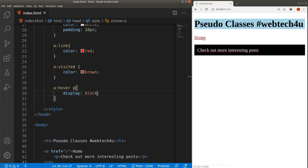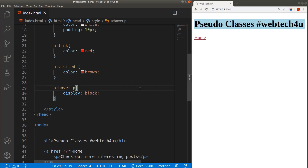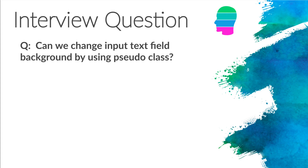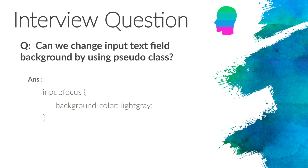With the help of pseudo classes we can create really nice tooltips. That's it for pseudo classes — now it's time for the interview question. The question is: can we change the input text field background using pseudo classes? Yes, we can. We just need to apply the 'focus' pseudo class to the input field, and whatever CSS property is specified within the curly braces will be applied to the input text field whenever you click inside it. That's it for pseudo classes — don't forget to subscribe, see you in the next tutorial.